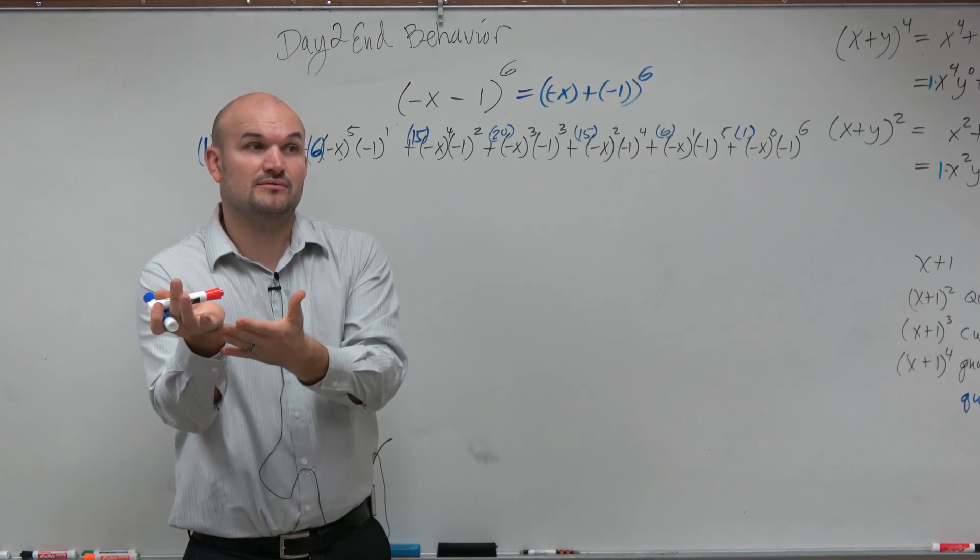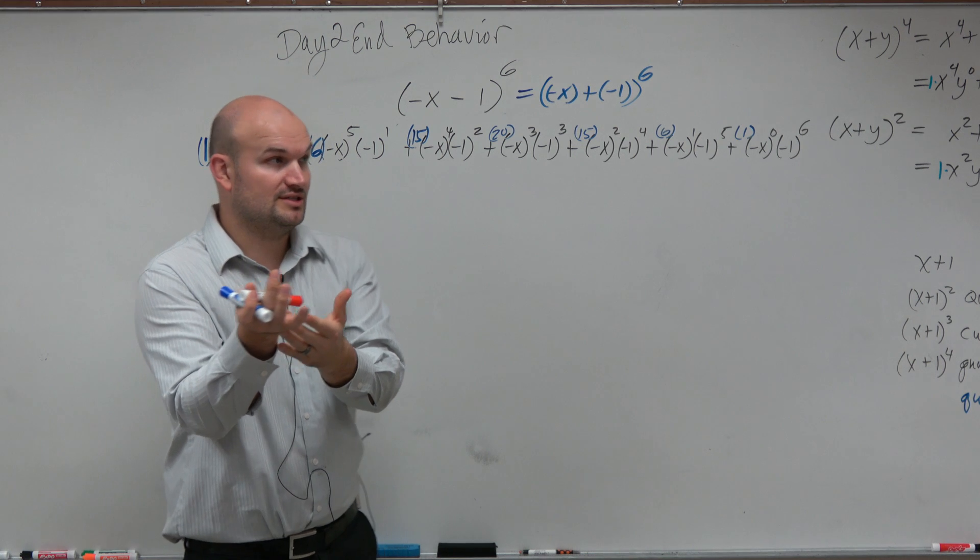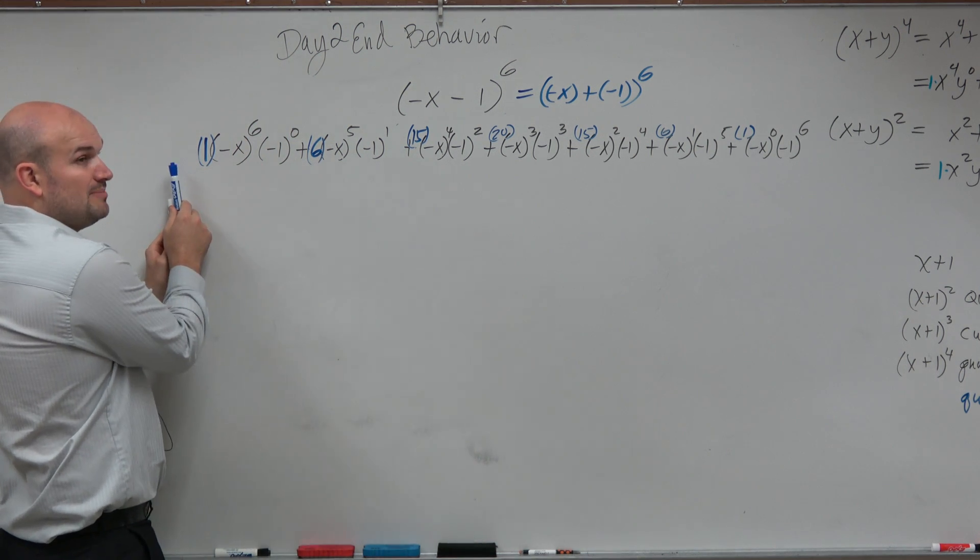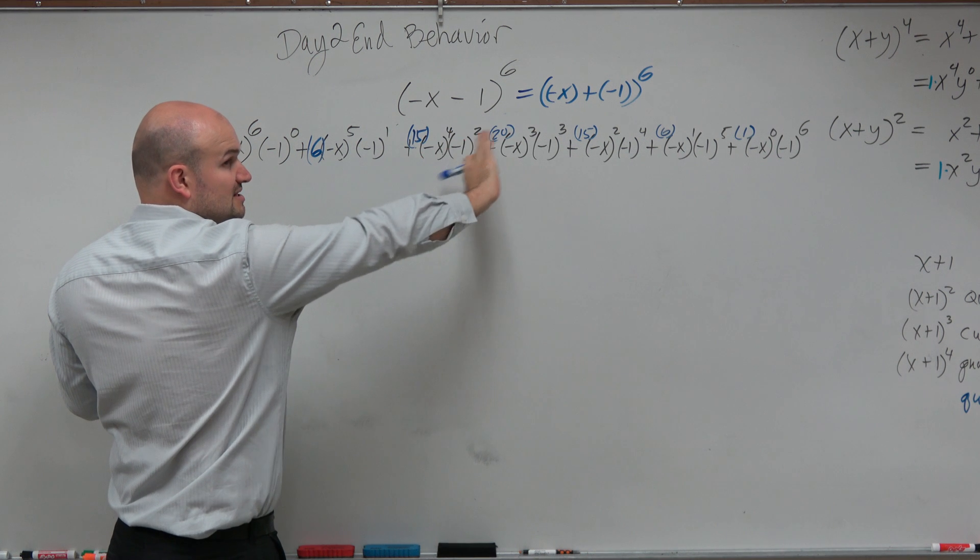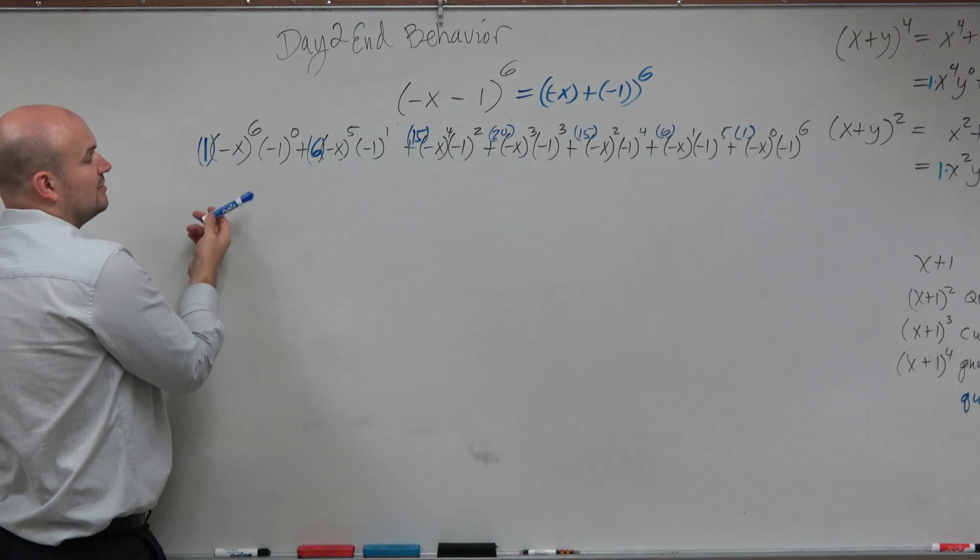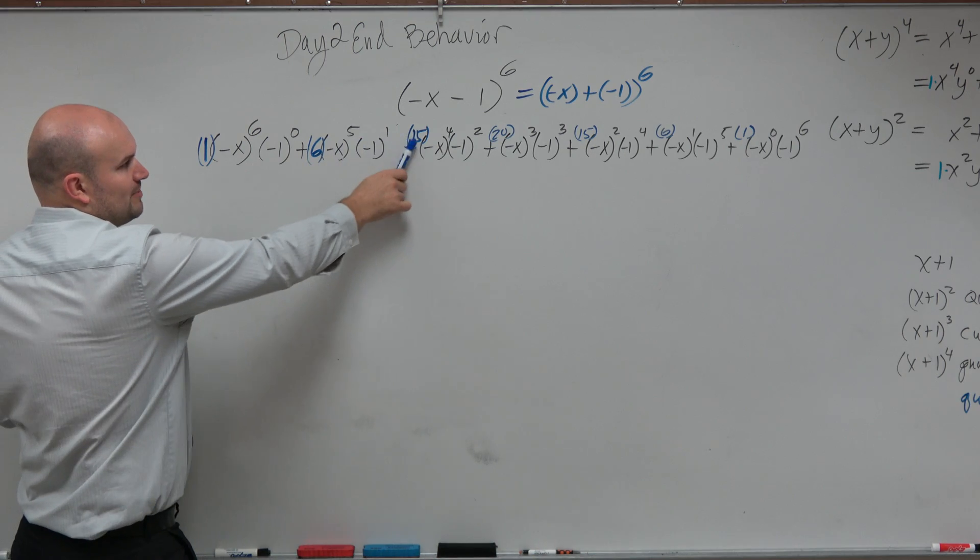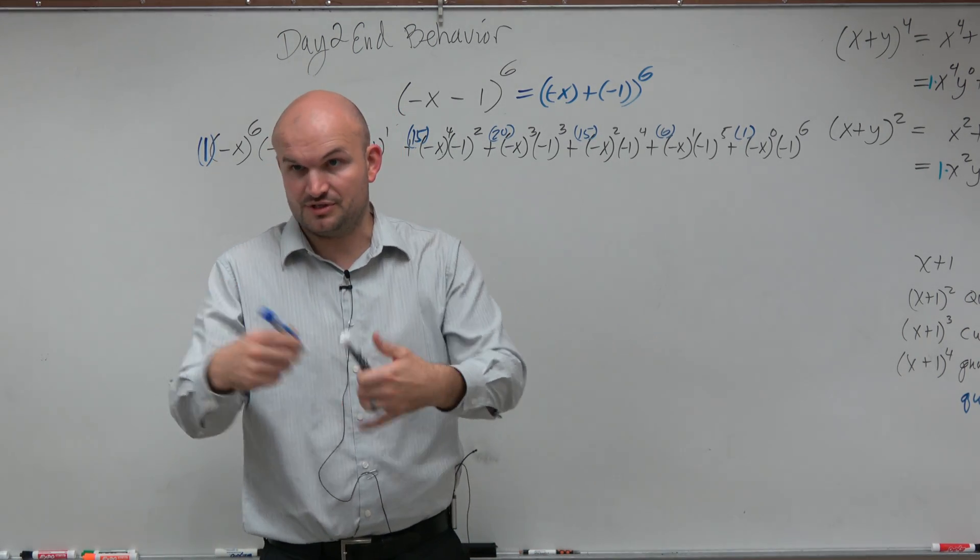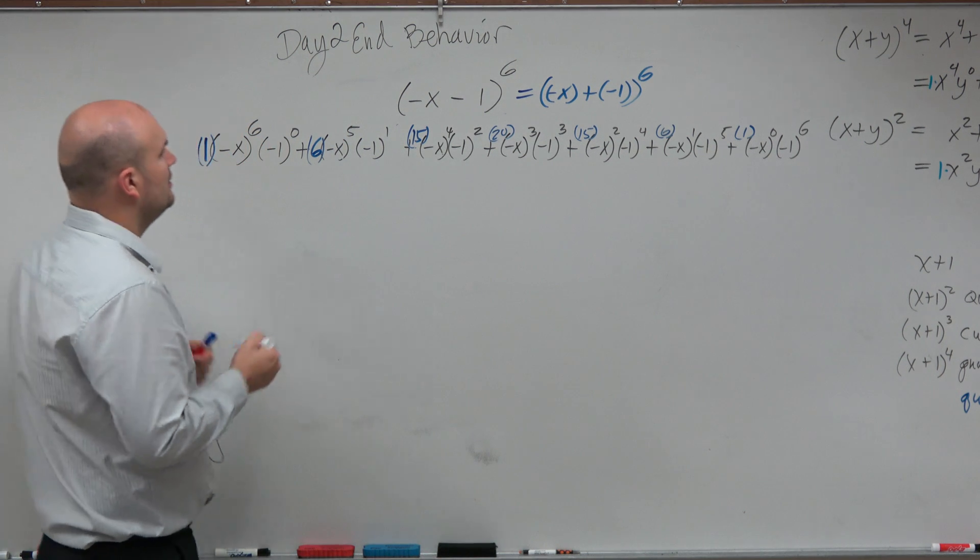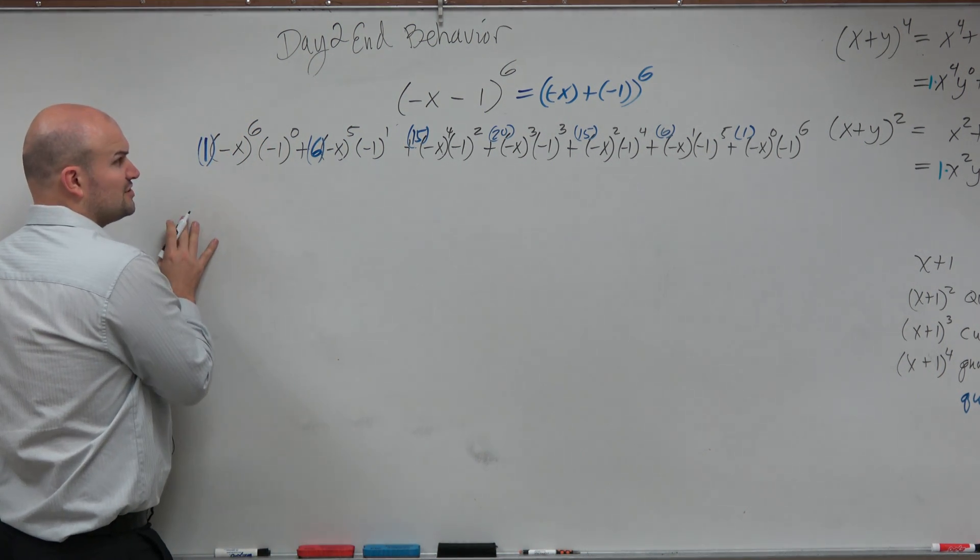So what I did is I took those values from Pascal's triangle and I multiplied each term. So there's two relationships, right? What Ashley and Nick looked at. First relationship is the powers. First term is descending. Second term is ascending. The second relationship is you're multiplying each term by the coefficients based on Pascal's triangle because we know those coefficients would happen. So now, let's just go and simplify this.